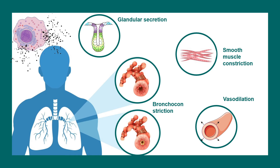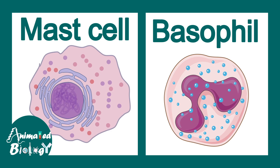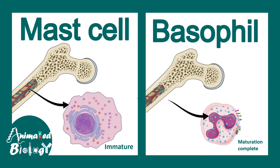Mast cells and basophils are kind of similar but have distinct differences. First of all, their nuclei are very different — mast cells have a roundish-shaped nucleus whereas basophils have a bilobed nucleus. However, both share the common surface marker CD34. Mast cells are generated from bone marrow but secreted in an immature state, whereas basophils are secreted already in a maturation state.